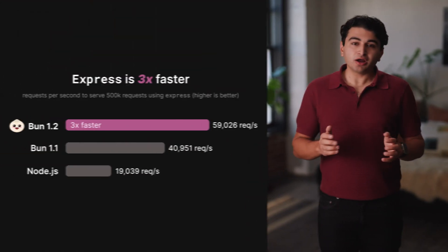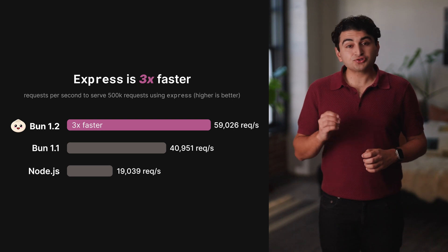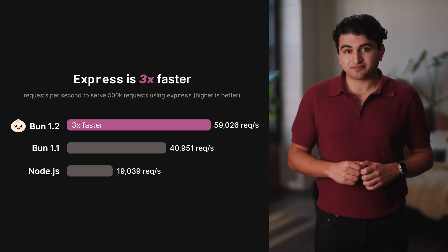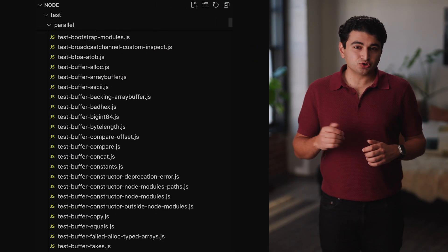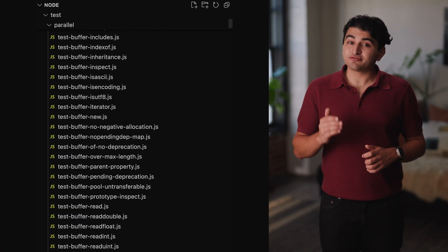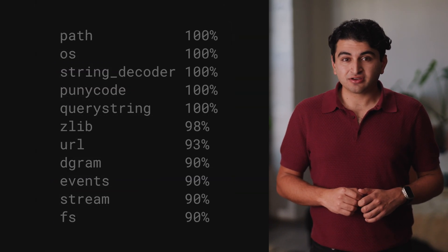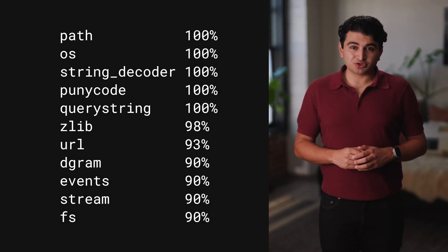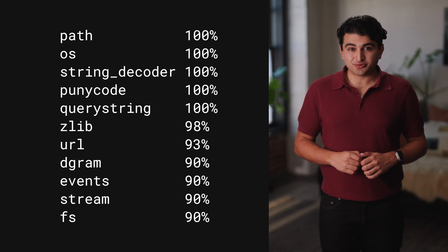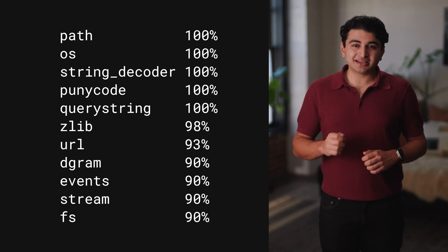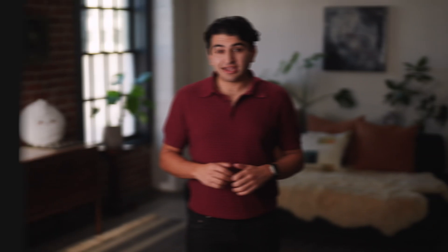We've also made some major performance improvements. In BUN 1.2, a Hello World Express server handles three times more requests per second than in Node.js. We started to run the entire Node.js test suite for every change we make to BUN — a suite that includes thousands of tests from Node's repository and ensures that if code works in Node, it also works in BUN. For each of the following Node.js modules, BUN passes over 90% of Node's test suite. Every day, BUN gets closer to 100% Node compatibility, and we're excited to share more progress on this very soon.